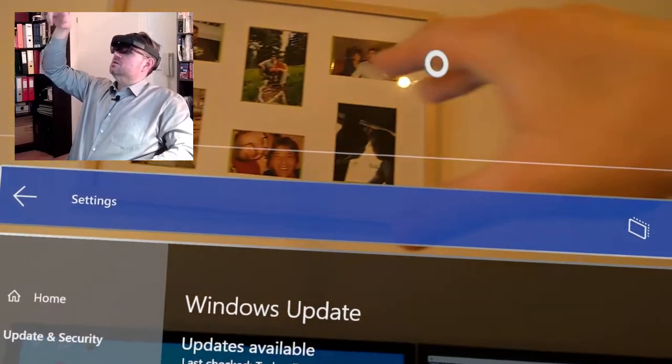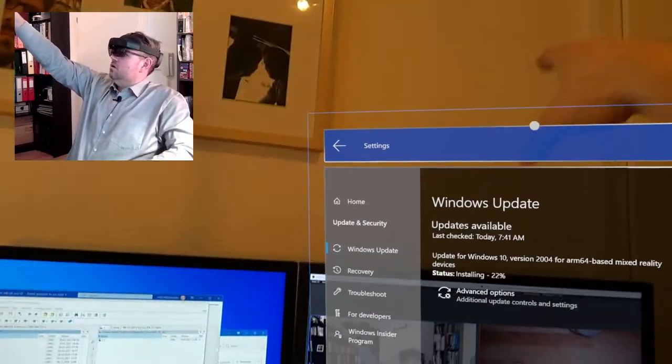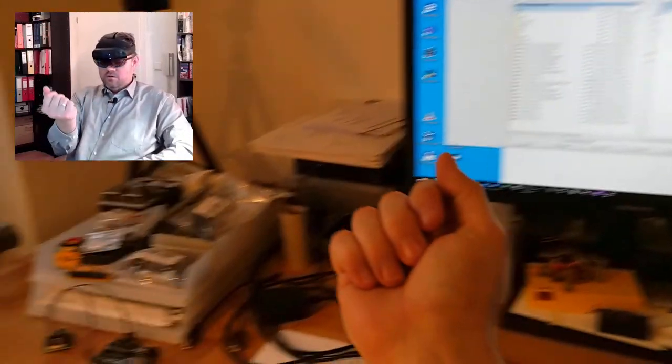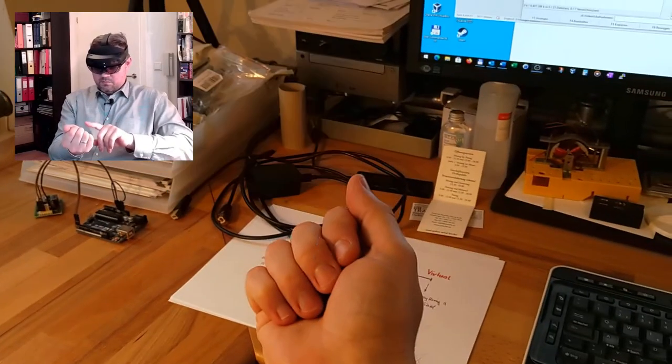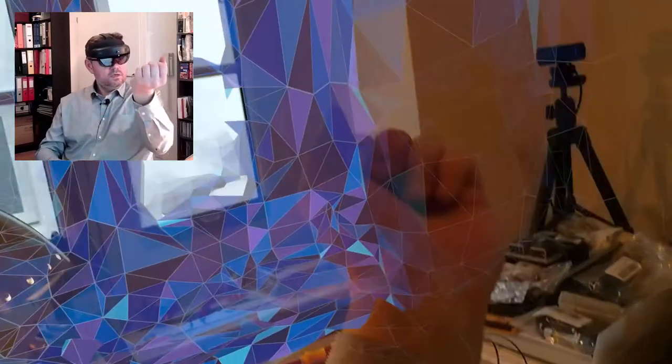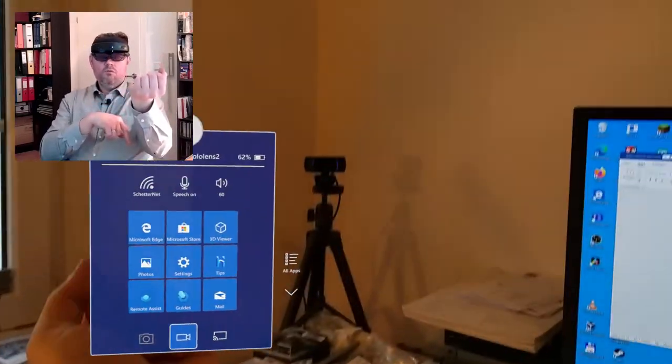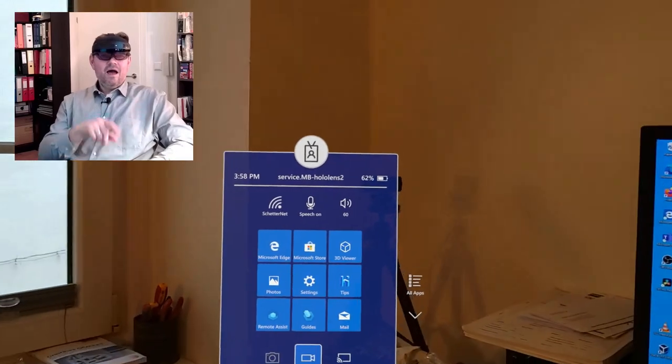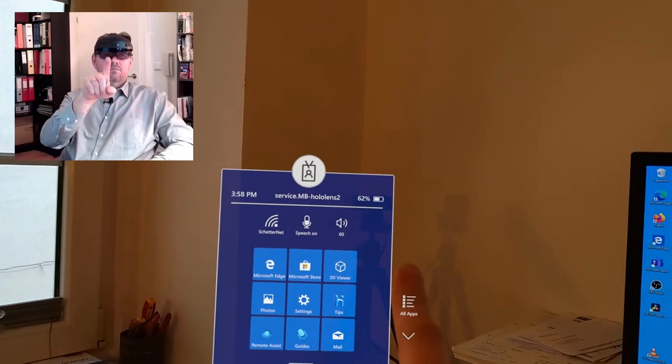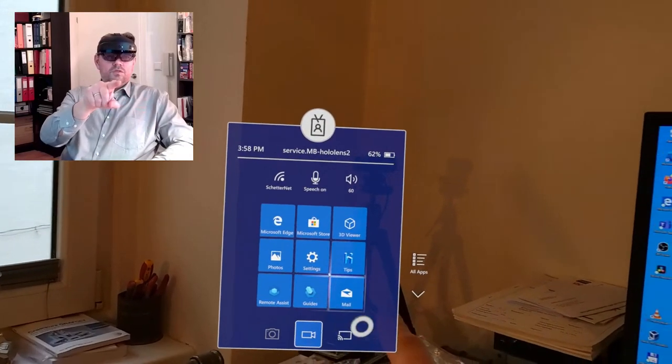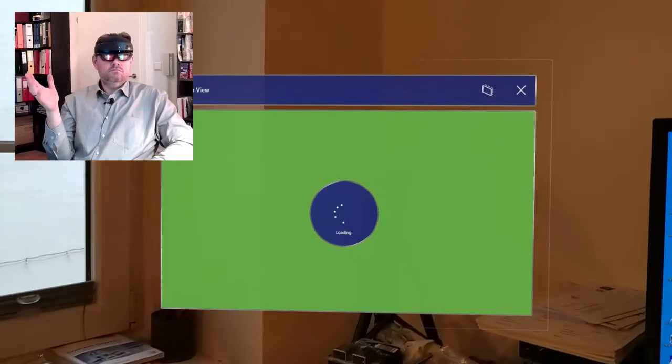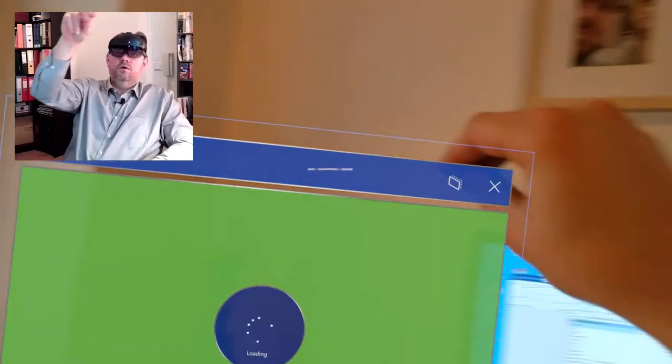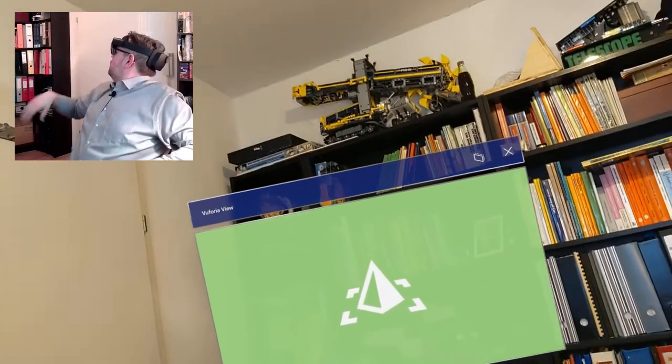These gestures and so on. I can open a start menu, how it is usual in Windows. I can close the start menu as well. You see here I do have a start button. I can simply select something here by tapping. You can put this window somewhere and so on. I can also close it again.